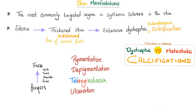The most commonly targeted organ in systemic sclerosis is the skin. Edema leads to thickened skin — thick, hidebound, with loss of normal folds. There is extensive dystrophic subcutaneous calcification, pigmentation, depigmentation, and telangiectasia — dilation of distant vessels at fingertips, lips, and toes. Ulcerations follow. Edema appears before the thickened skin, and fingers are involved before the face. The progression goes: fingers, arms, shoulders, trunk, neck, then face.